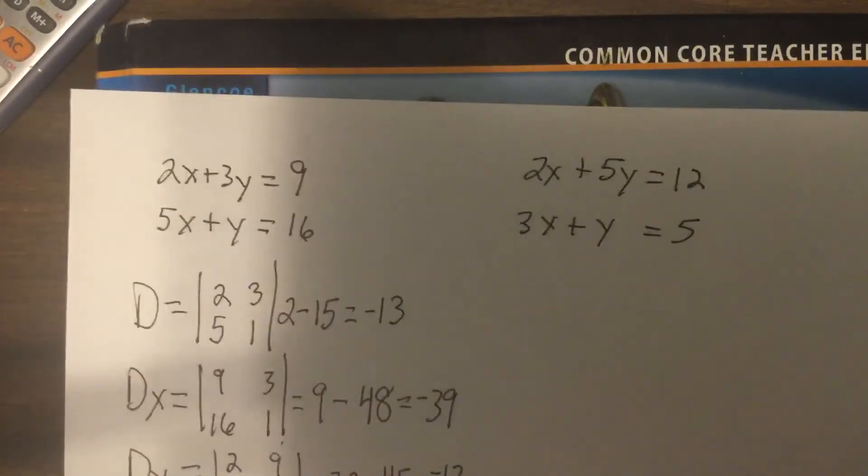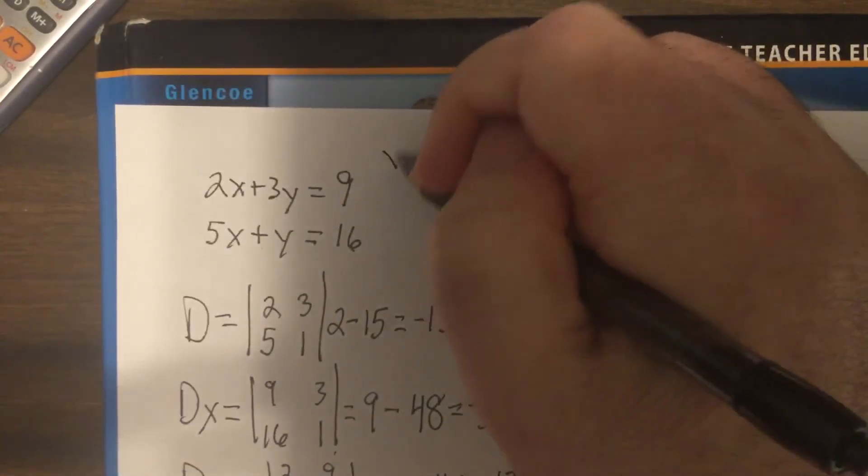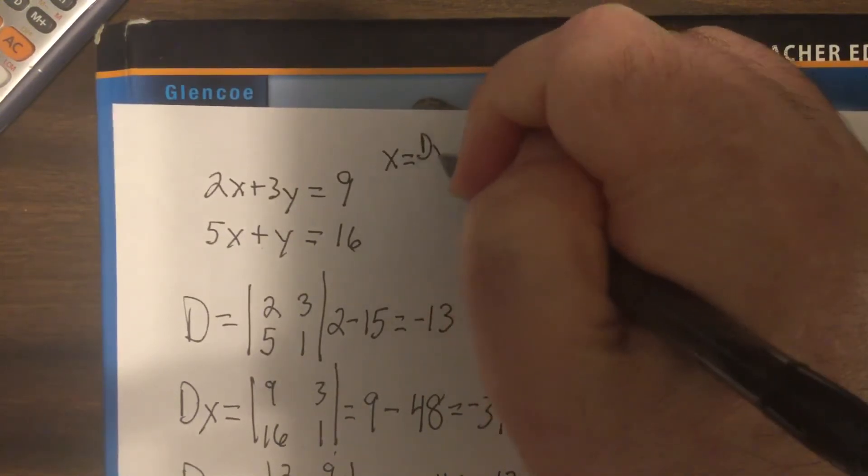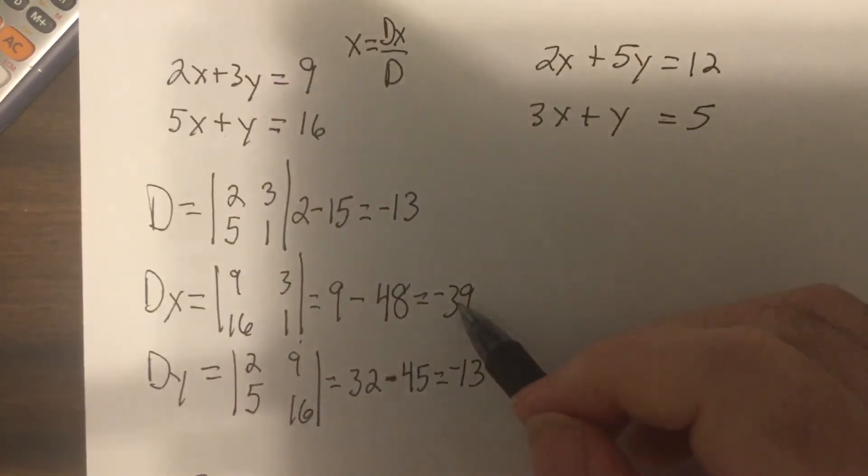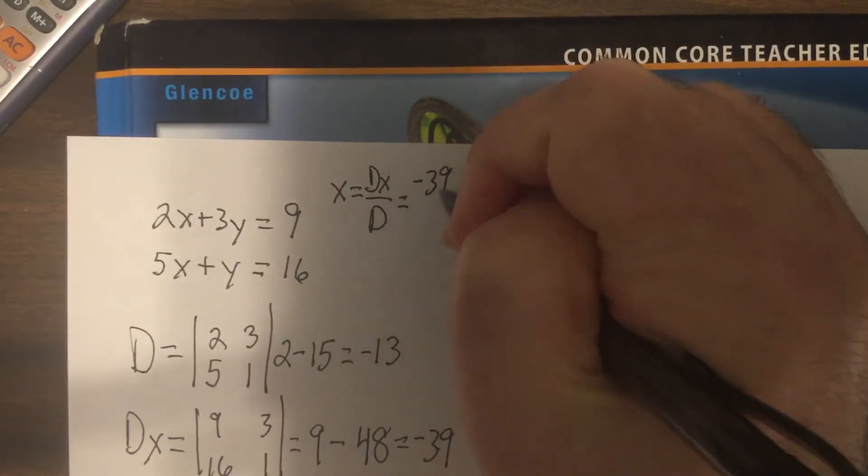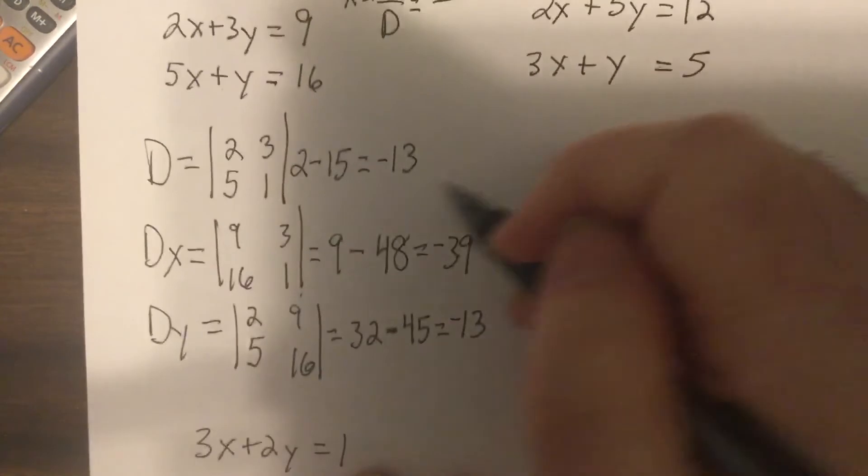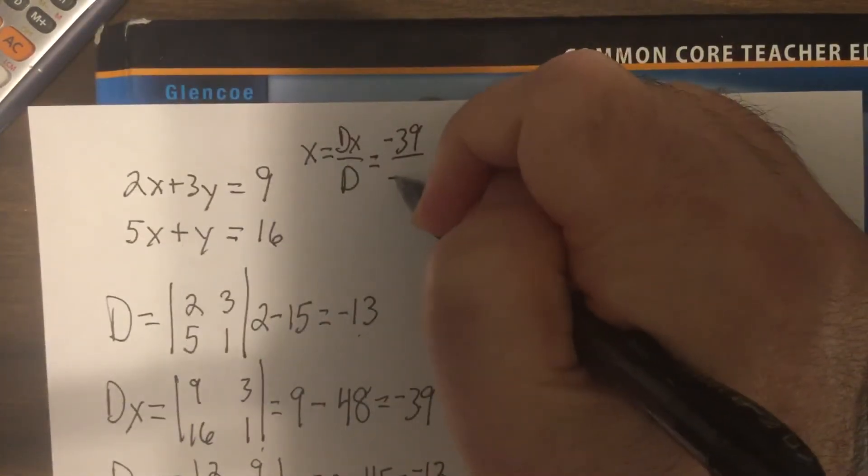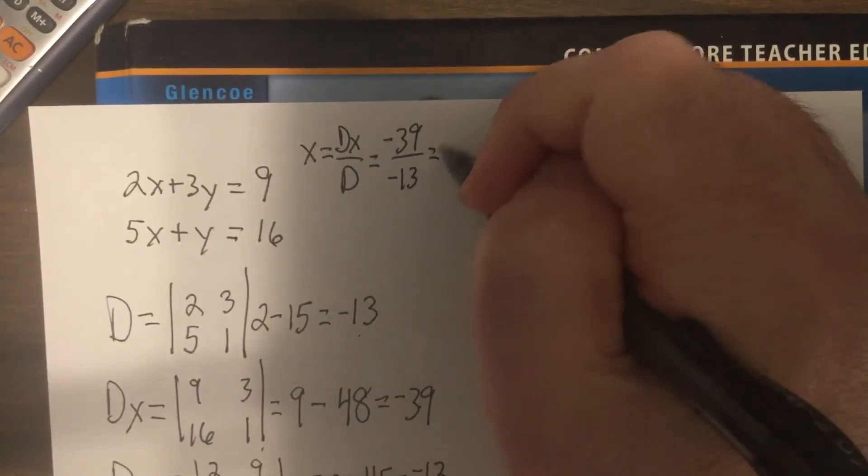And that would be 32 minus 45, which is negative 13. I'm using up too much room. So X is DX divided by D. DX is negative 39.